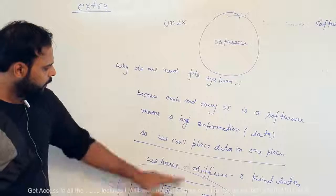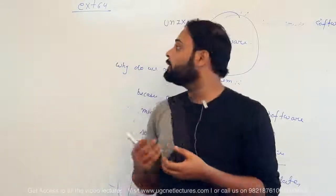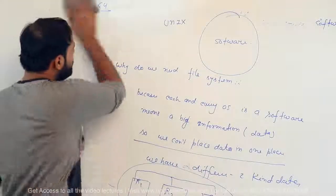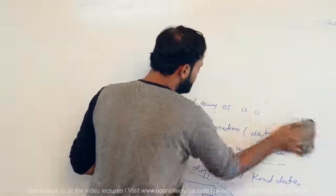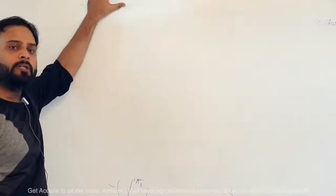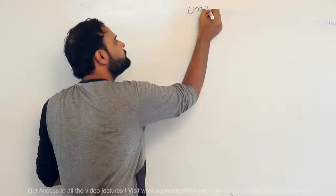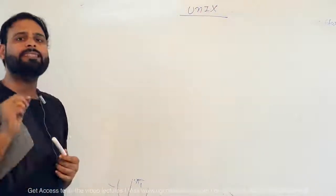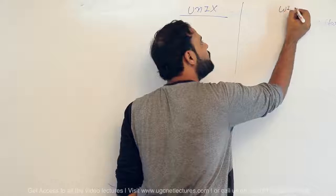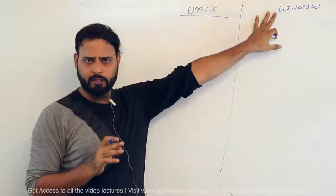The basic question of why we use a file system is now clear. Linux and UNIX use ext64. Now let's look at a basic property of the UNIX file system. The UNIX file system is based on a root file system. I'll differentiate UNIX and Windows here, since Windows is very familiar to most users. In Windows, you see C:, D:, E: drives — the hard disk is divided in terms of drive letters.